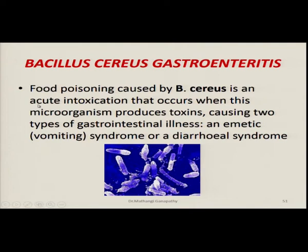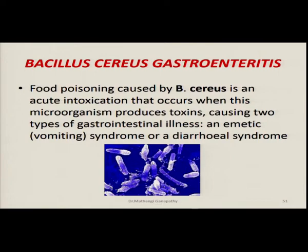The second type of food poisoning we will discuss is Bacillus cereus gastroenteritis. Food poisoning caused by B. cereus is an acute intoxication occurring when this microorganism produces toxins causing two types of gastroenteritis: an emetic syndrome or a diarrheal syndrome. Depending on which type of enterotoxin B. cereus produces, the disease can manifest in two ways — vomiting caused by one type of enterotoxin, or diarrhea caused by a different set of enterotoxins.